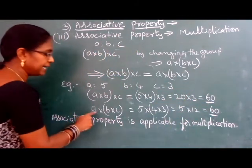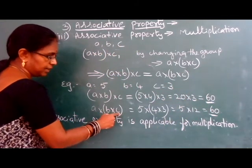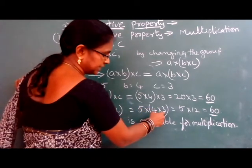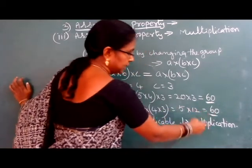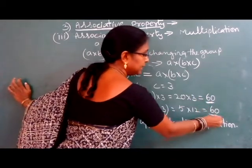Second one, A into B into C. Here first we have to multiply B into C, that is 12, and multiply with 5, you will get 60. Then both the results are equal.